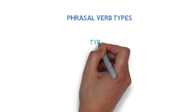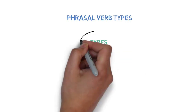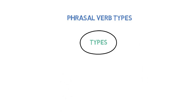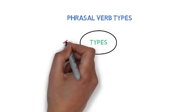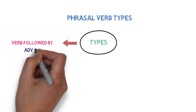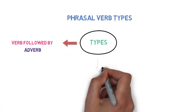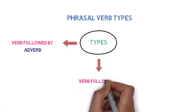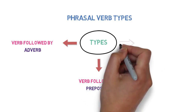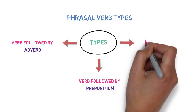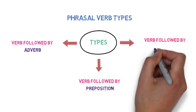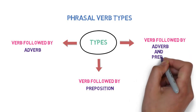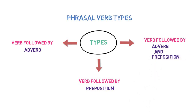Based on other words in the group, we have divided phrasal verbs into three types. First is verb followed by adverbs. Second is verb followed by preposition. And third is verb followed by adverb and preposition. Let's look into examples of each of these types to make things clear.